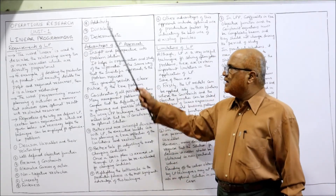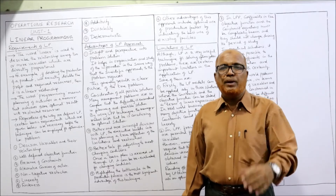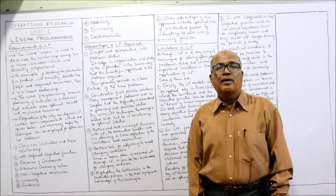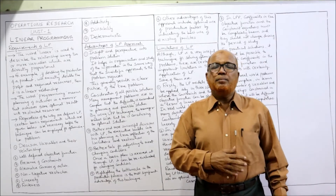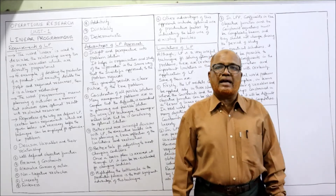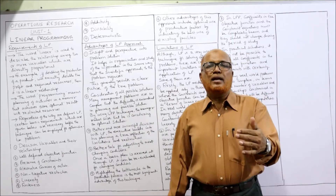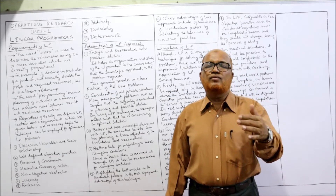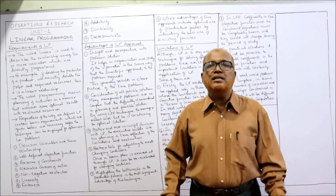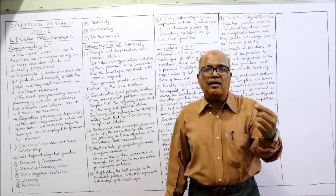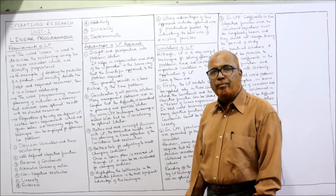There should also be finiteness — finite demand and finite resources, not infinite. Then additivity — we can add the values; for example, the material required for product A and product B can be added together if they use the same material. Next, divisibility — resources are divisible among different products or activities. Finally, deterministic — we should be able to clearly determine in advance the profit per product and resources needed, with no uncertainty in the objective function or constraints.